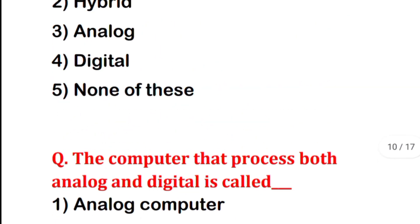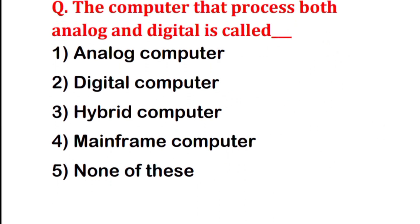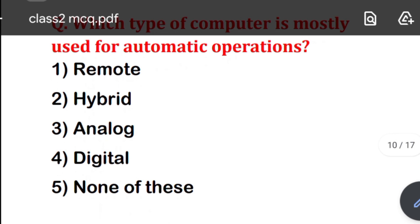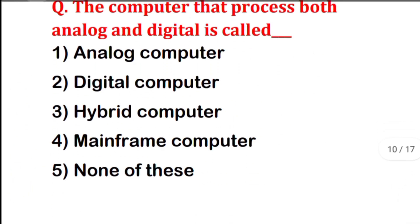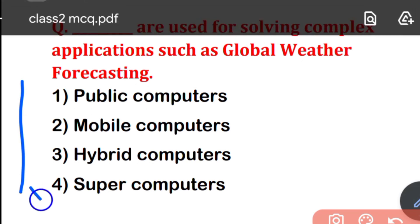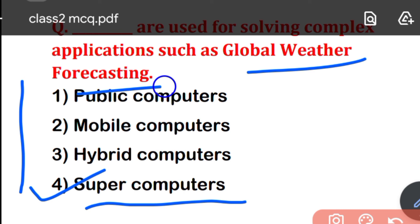The computer that processes both analog and digital data is the Hybrid computer. Next question: which computers are used for solving complex applications such as global weather forecasting? Options are: Public computer, Mobile computer, Hybrid computer, or Supercomputer. The correct answer is Option 4 — Supercomputer. We use supercomputers for weather forecasting.